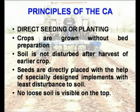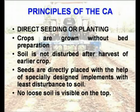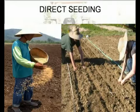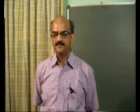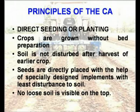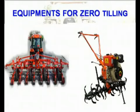The principles of conservation agriculture: crops are grown without bed preparation — no special bed preparation takes place. Soil is not disturbed after harvest of the earlier crop. Seeds are directly placed with the help of specially designed implements — seeds are directly sown in the soil without plowing or disturbing the soil around the seed, and no loose soil is left on top. These implements could be hand-driven or machine-driven.